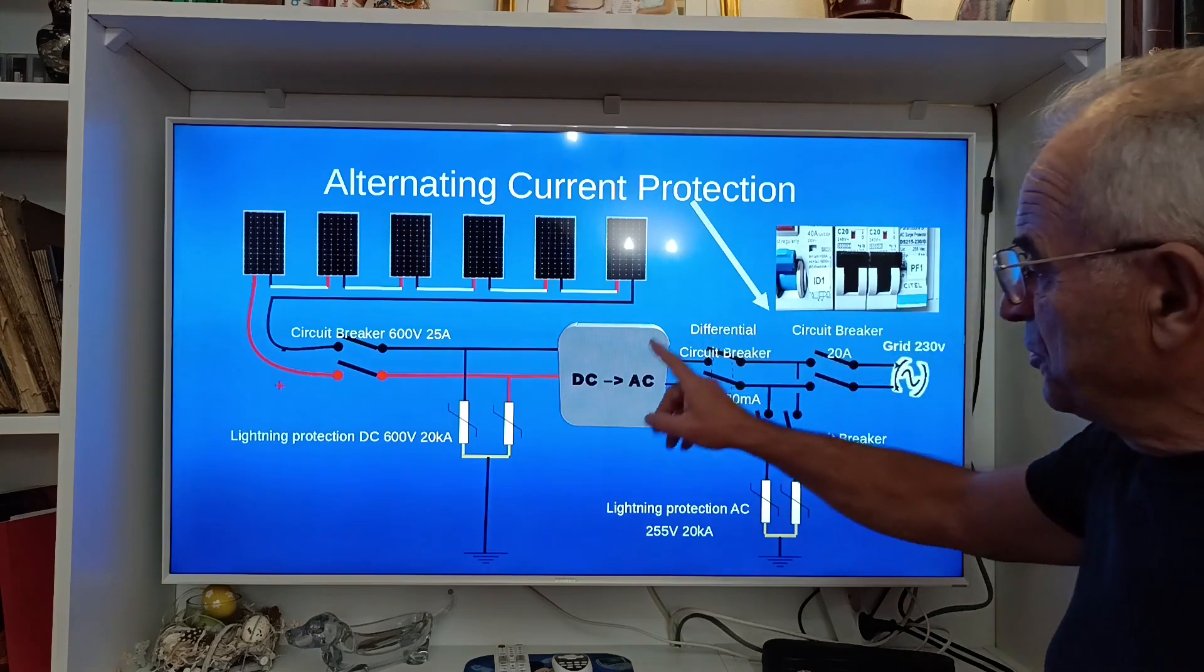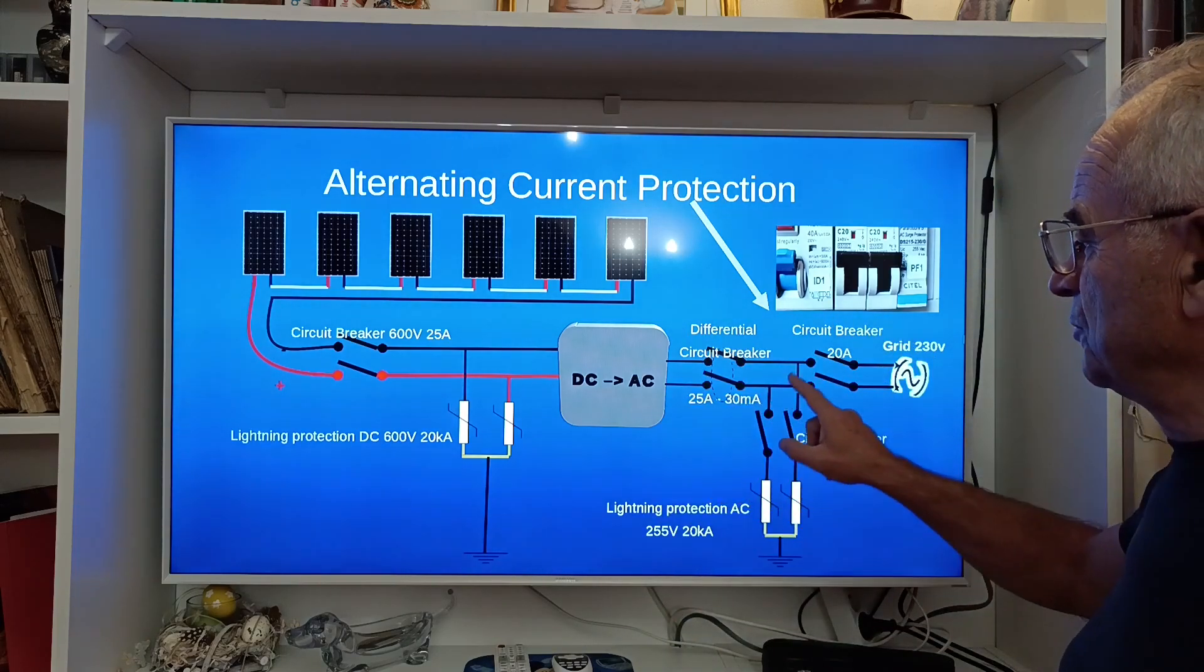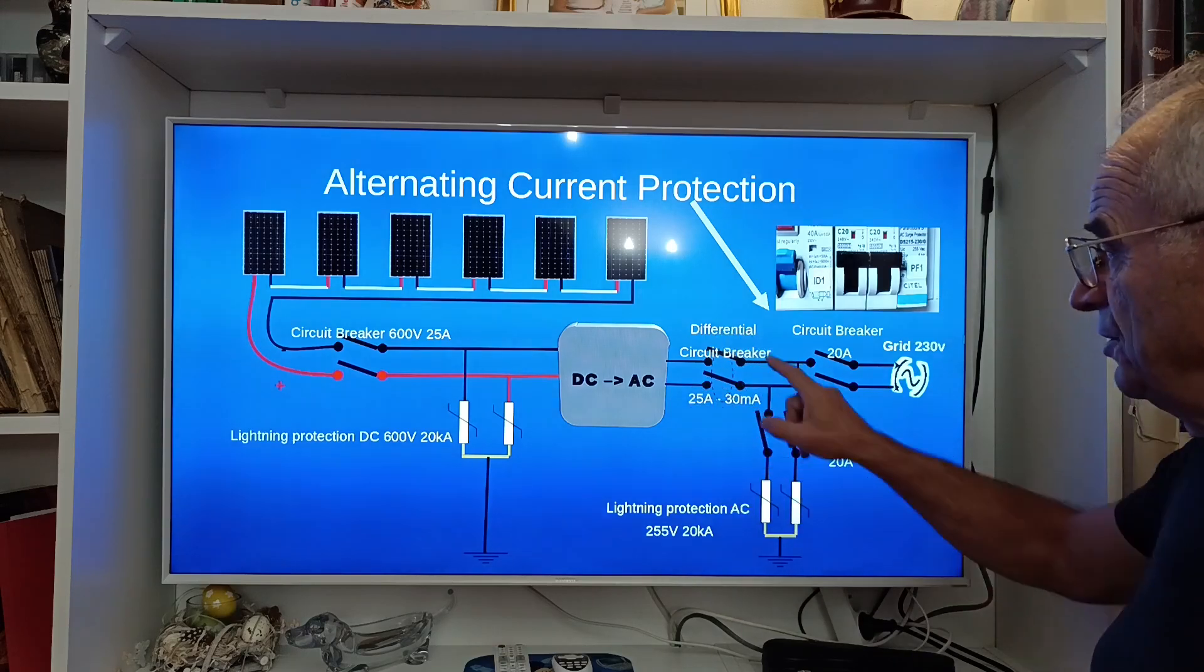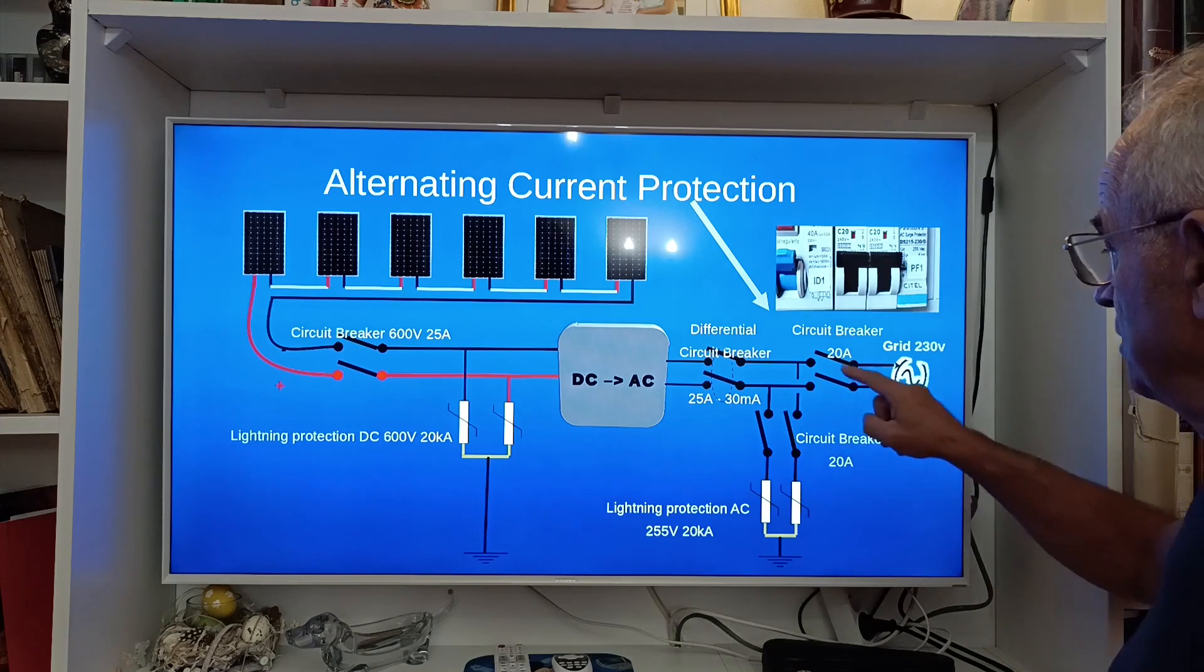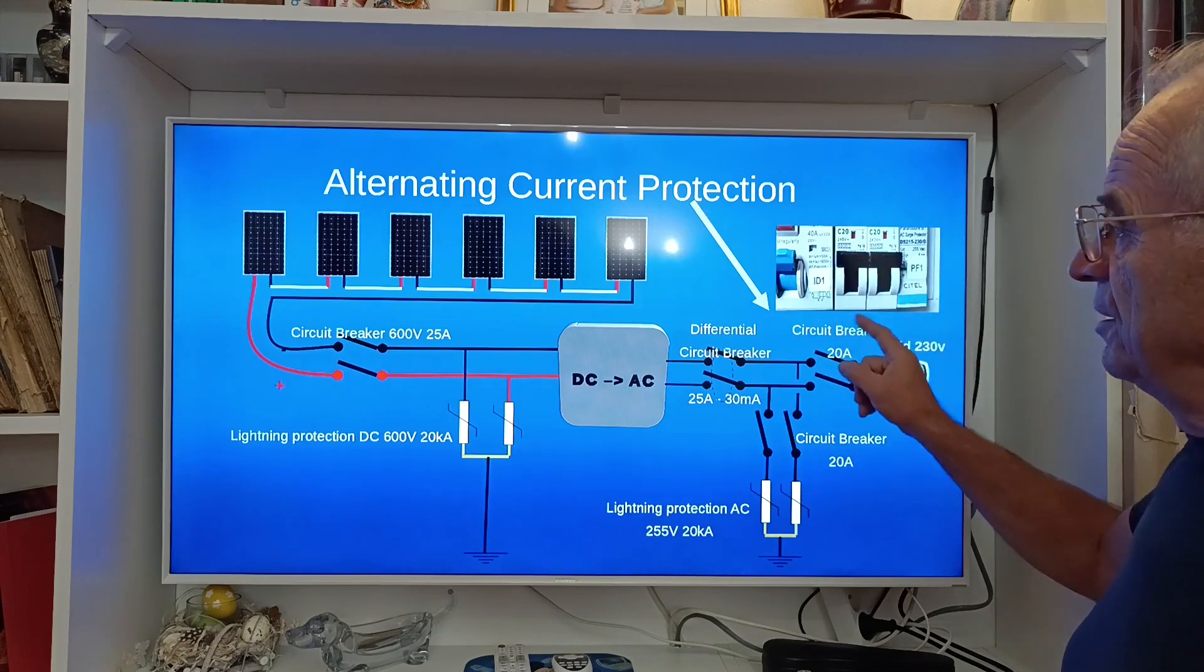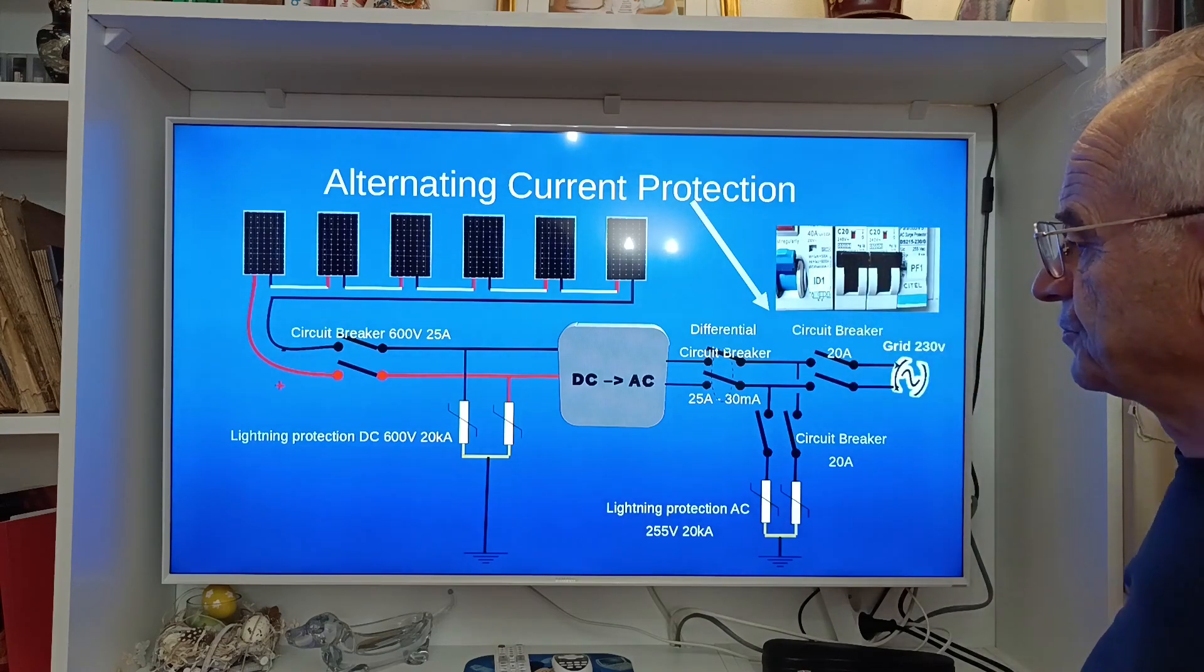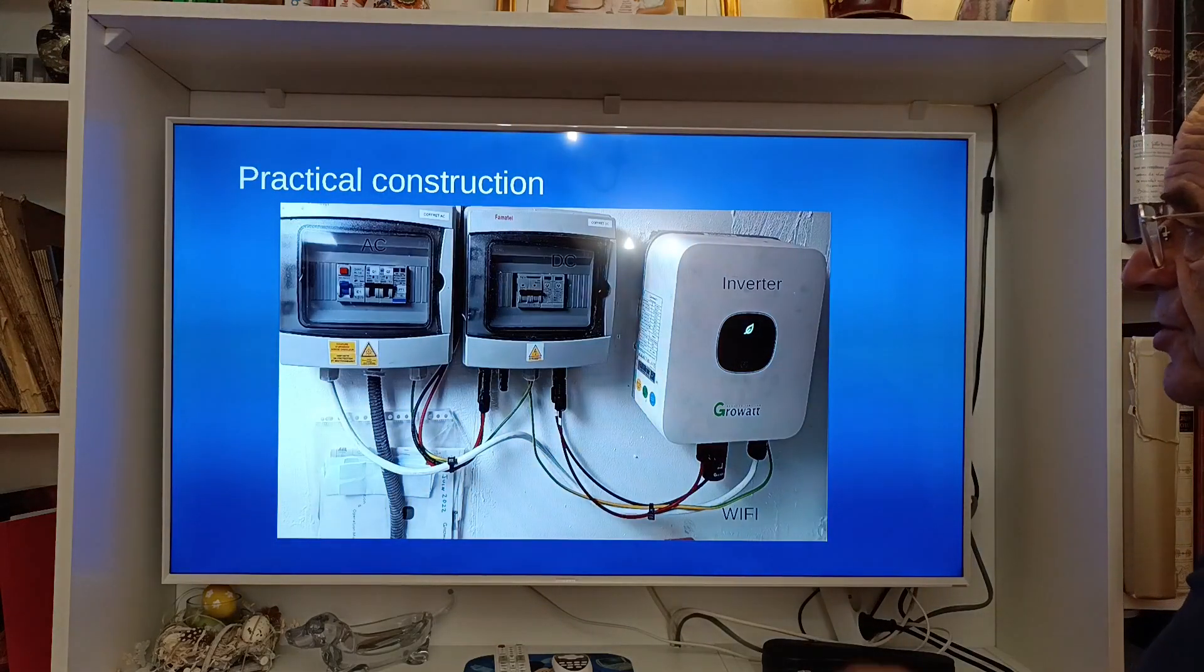At the output, on the AC output of the inverter, we have to put also a circuit breaker, a differential one, as we have in every house, a circuit breaker of 20 amps and a lightning protection on the AC side. This is the complete configuration.